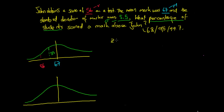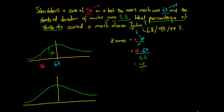We use our z-score formula. Our z-score is our x value minus our mean (mu), divided by our standard deviation. So that's 56 minus 67, divided by 5.5, which gives us negative 11 divided by 5.5. That gives us a z-score of negative 2. So John's mark of 56, once standardized, comes out to negative 2 on our standardized curve.